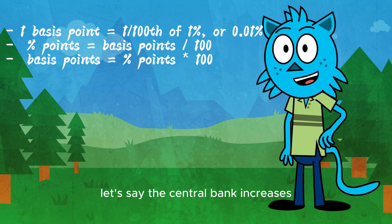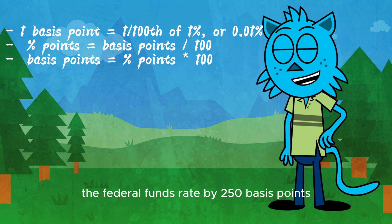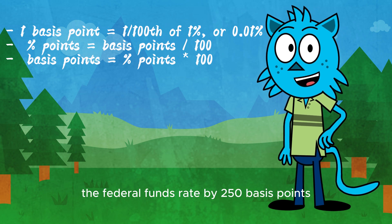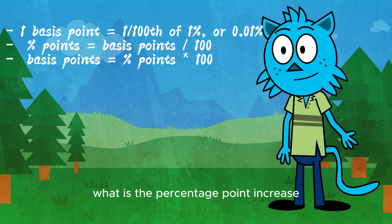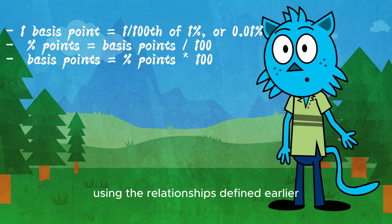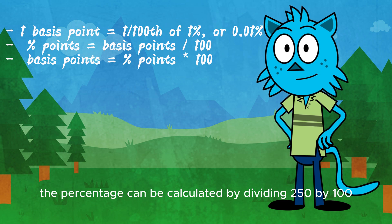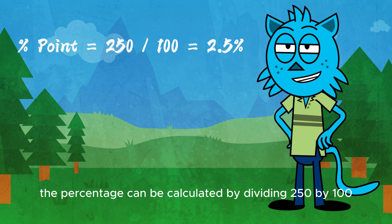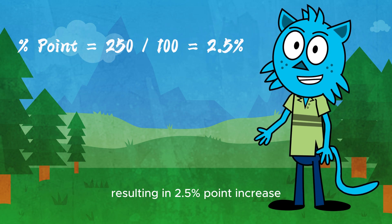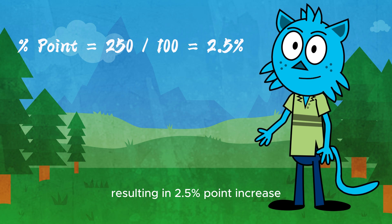Let's say the central bank increases the federal funds rate by 250 basis points. What is the percentage point increase? Using the relationships defined earlier, the percentage can be calculated by dividing 250 by 100, resulting in a 2.5 percentage point increase.